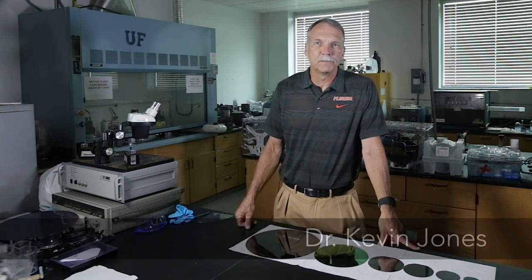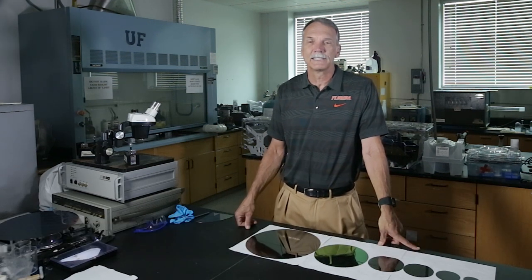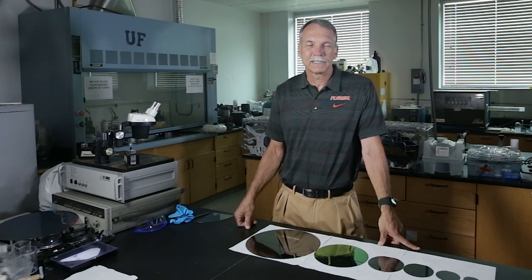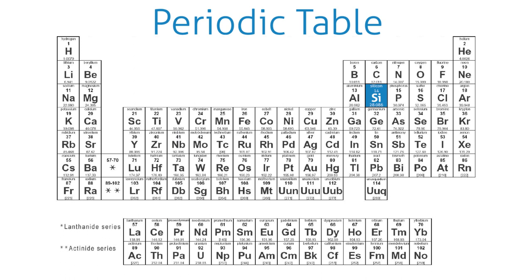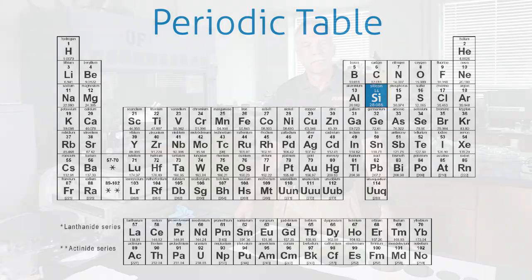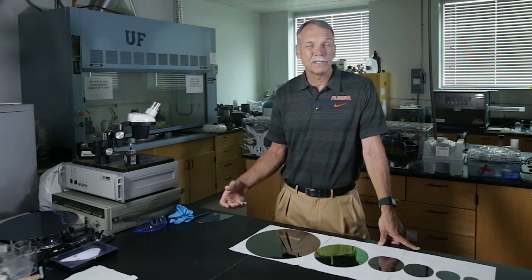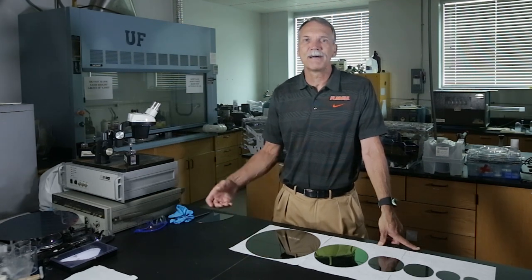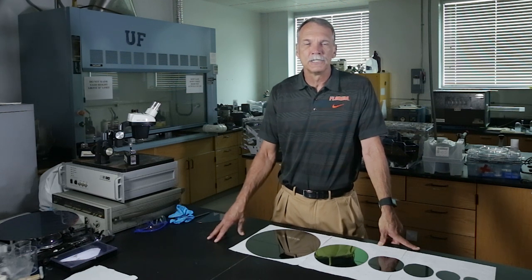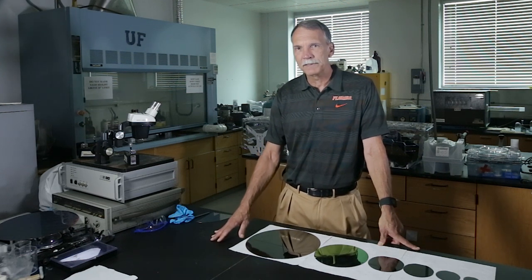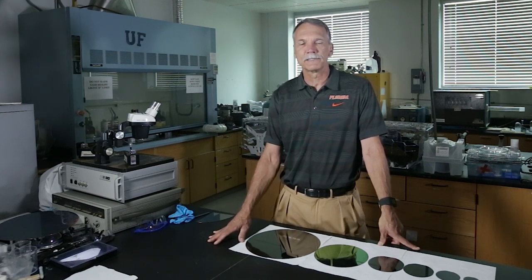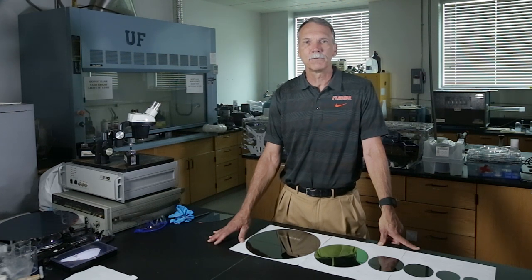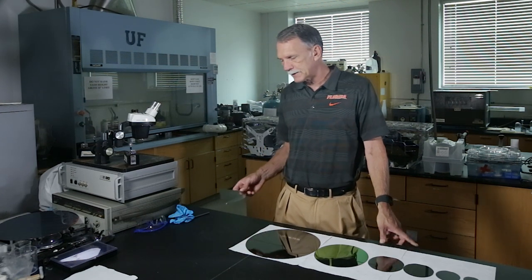Today we're going to be talking about a material that is ubiquitous in your life — it's called silicon. To begin with, we have to ask ourselves: what is silicon? Silicon is a group 4 element; it falls right underneath carbon in the periodic table. You've probably heard of things like Silicon Valley, and we're living in the silicon age. So what is this material and why do we use it so much?